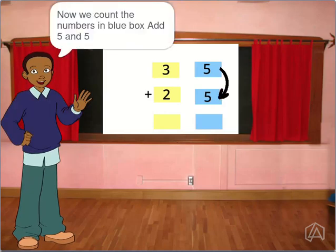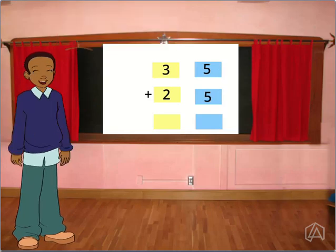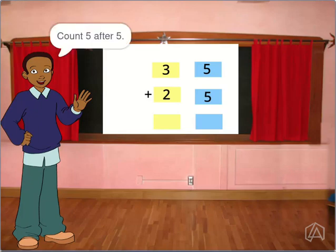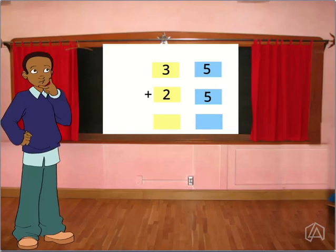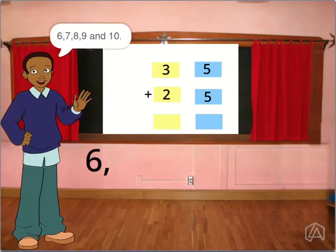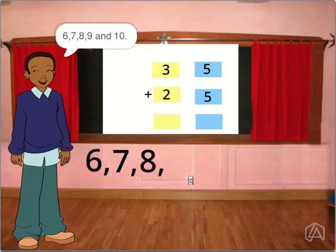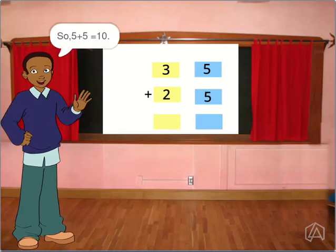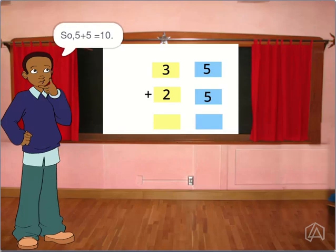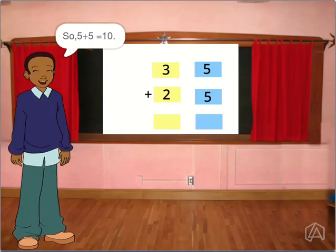Now, we count the numbers in blue box. Add 5 and 5. Count 5 after 5: 6, 7, 8, 9 and 10. So, 5 plus 5 is equal to 10.